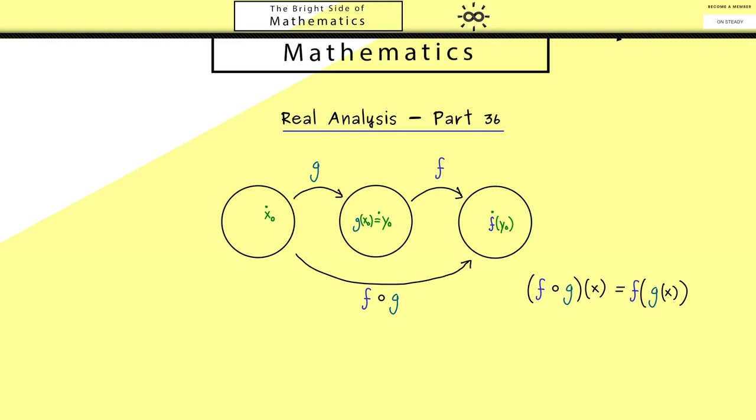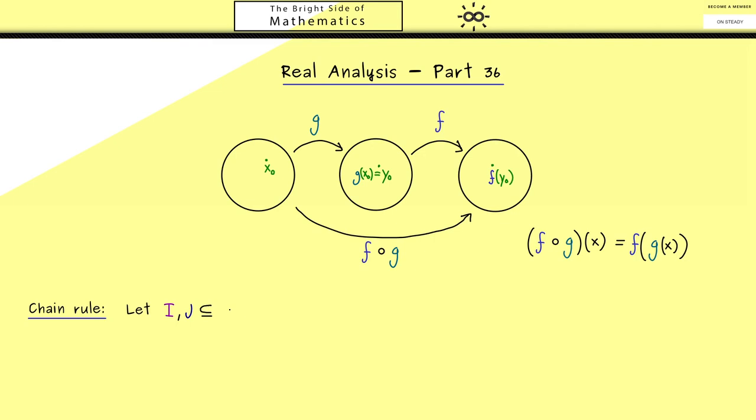So first let's formulate the chain rule and then prove it. Now to keep it simple let's fix two intervals I and J here. So I should be on the left and J in the middle. Hence what we also have is that the function g goes from I into J and f goes from J into R.